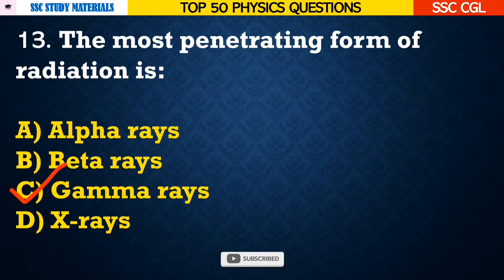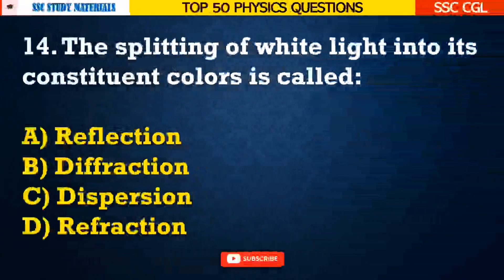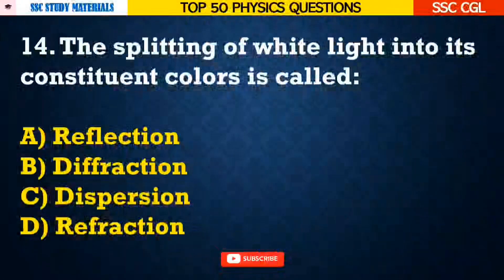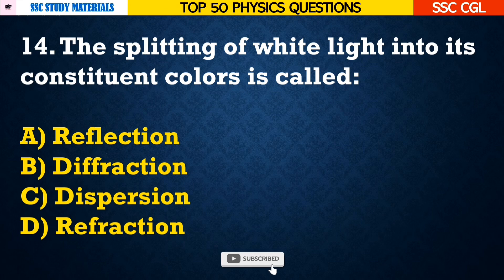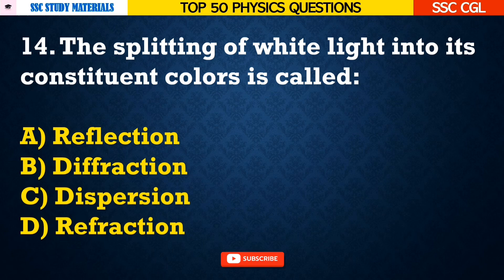Question number 14: The splitting of white light into its constituent colors is called — Answer C. Dispersion.